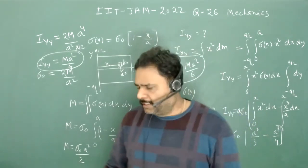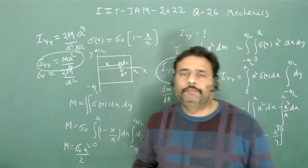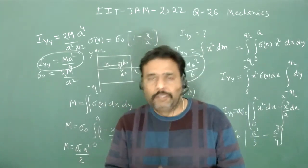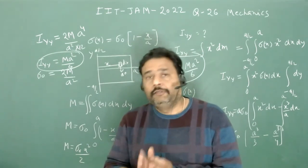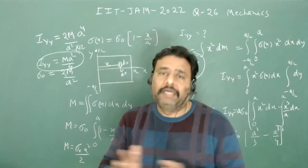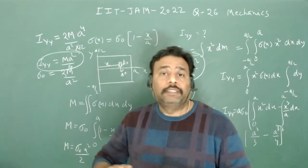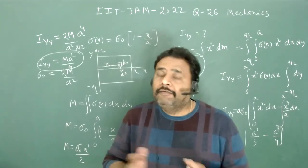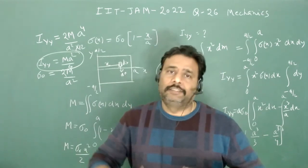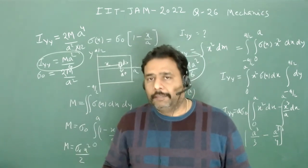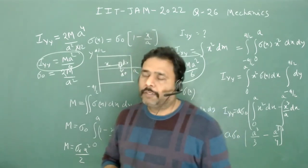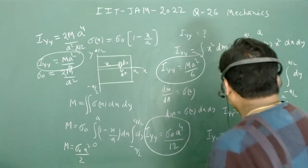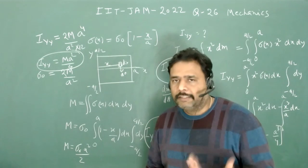This is a very nice and conceptual problem. It requires knowing the definition of moment of inertia, understanding how to handle variable mass density with position, and finally replacing mass density in terms of the total mass M of the lamina. The numbers are quite clean, making the integrations straightforward.